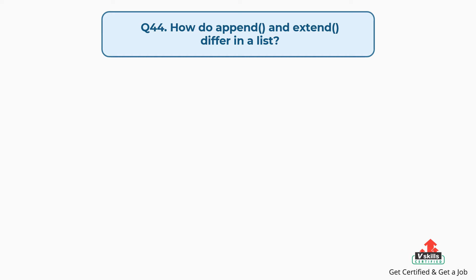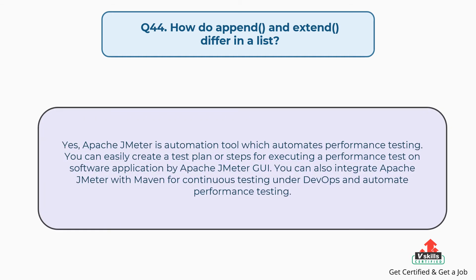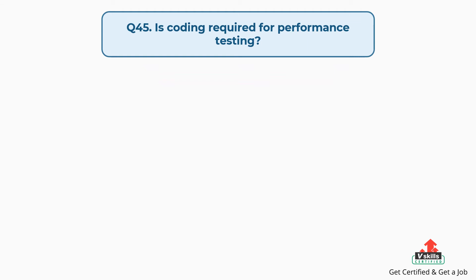Question 44: How do append and extend differ in a list? Apache JMeter is an automation tool which automates performance testing. You can easily create a test plan for executing a performance test using the JMeter GUI. You can also integrate Apache JMeter with Maven for continuous testing under DevOps.